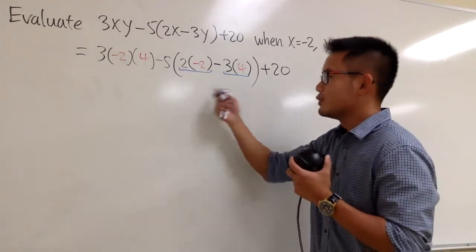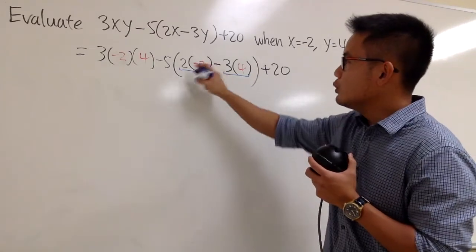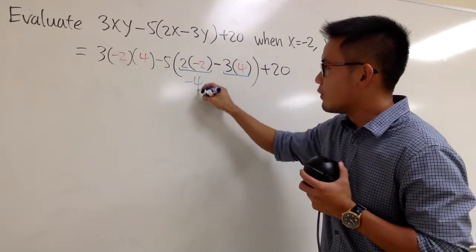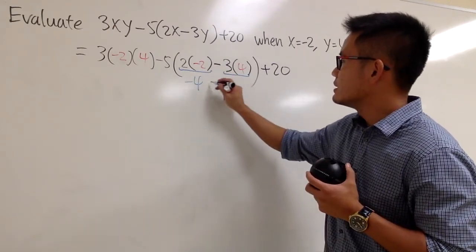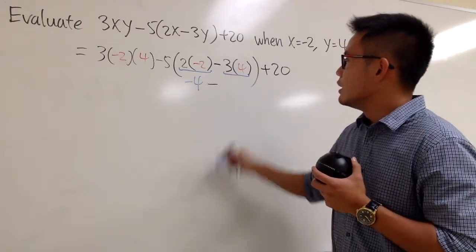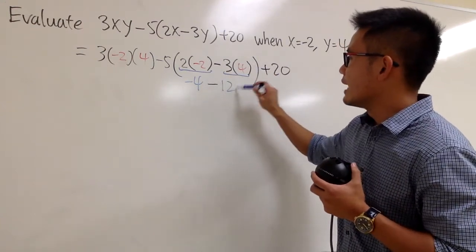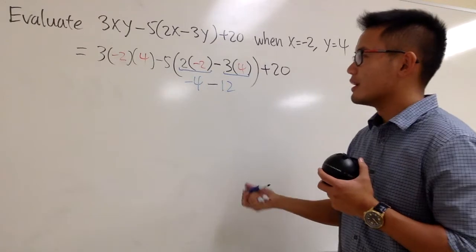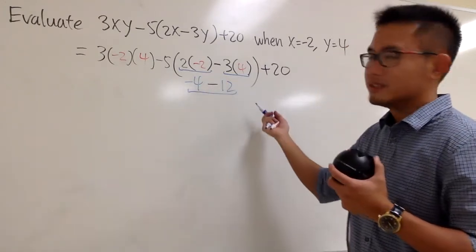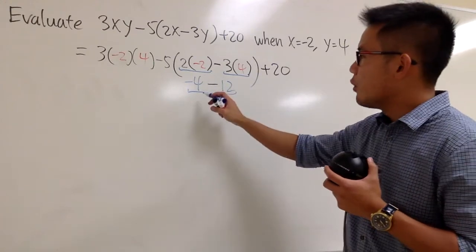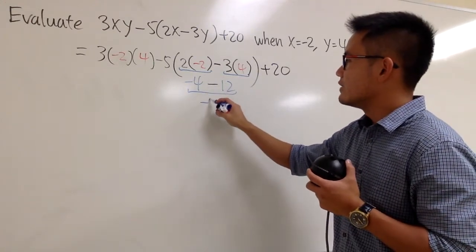Let me just multiply this right here for you guys. 2 times negative 2 is negative 4, and let me bring down the minus, because I know 3 times 4 is 12 like this, and that's a minus in between. At the end you can still work this out because it's still in the parentheses. Negative 4 minus 12 is negative 16, isn't it?